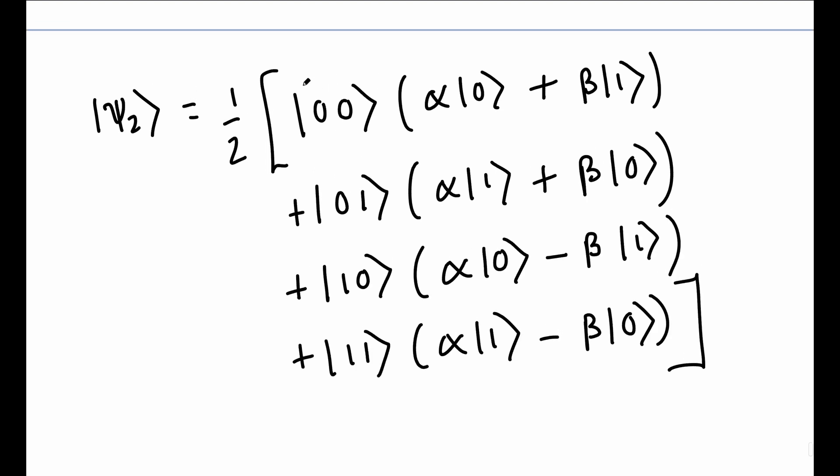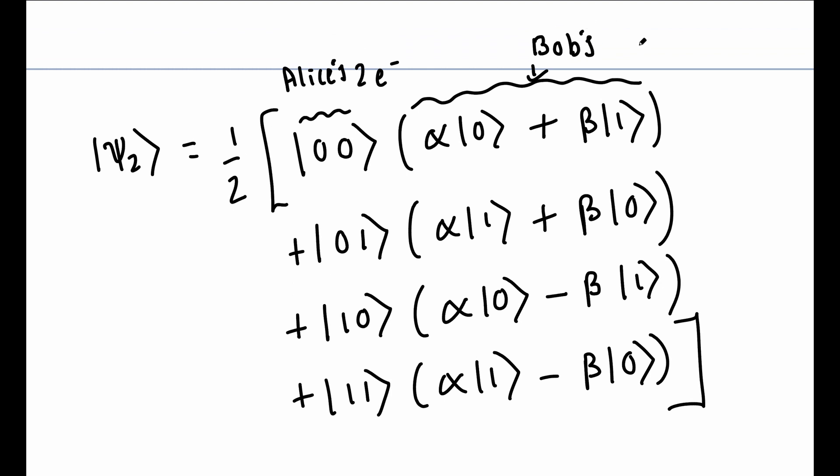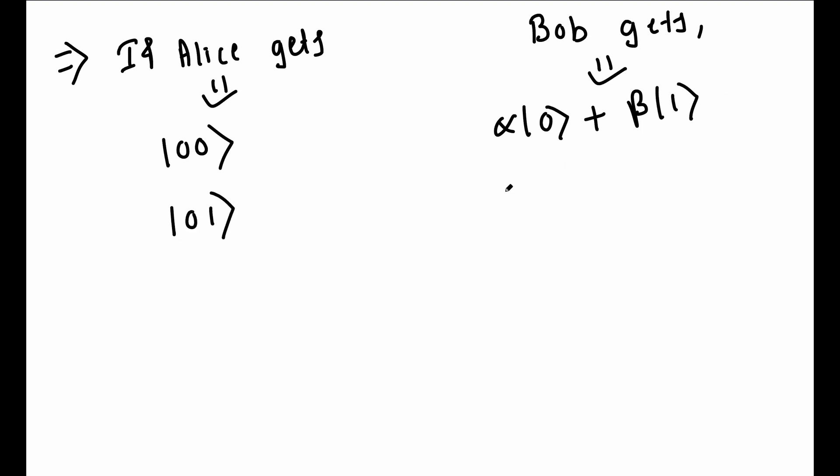The first term has Alice's qubit in state ket 00 and Bob's qubit in state alpha ket 0 plus beta ket 1, which is the original state ket psi. Therefore, if Alice performs a measurement and obtains the result as ket 00, then Bob's system will be in the state ket psi. Similarly, if Alice gets the measured state as ket 01, then Bob's state will be alpha ket 1 plus beta ket 0. Similarly for other two states.